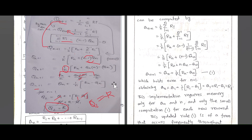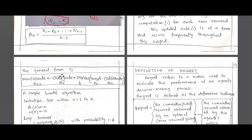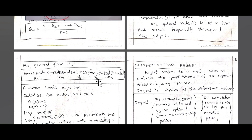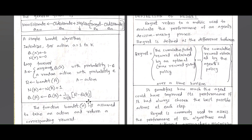This formula is an update rule that occurs frequently in this subject, so make sure to remember it. The general form is: New estimate = Old estimate + step size * (Target - Old estimate). That is Q_{n+1} = Q_n + (1/n)*(r_n - Q_n). This is a simple bandit algorithm. Also note that Q(a) tends to 0 as N(a) tends to infinity.